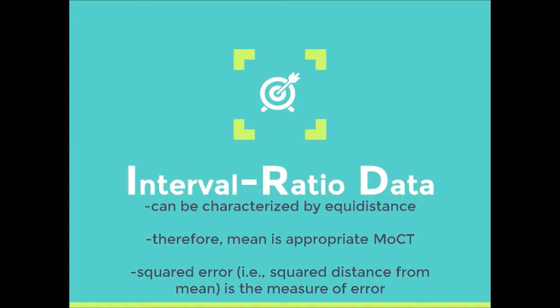If we have interval ratio data, we're going to have equidistance and therefore we can do math. And because we can do math, we would use the mean for central tendency, and the mean will minimize squared error. All of our measures of dispersion or variability around the mean are going to incorporate or be built on this concept of squared error. Dispersion around the median focuses on simple distance, but dispersion around the mean focuses on squared error.